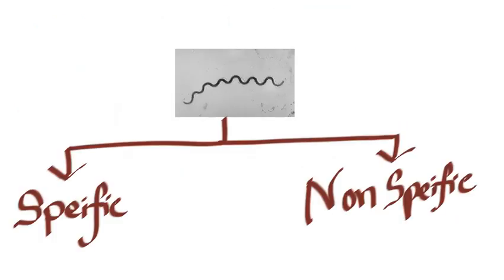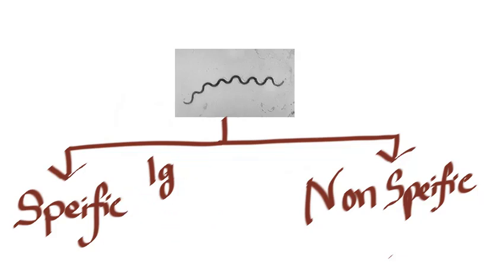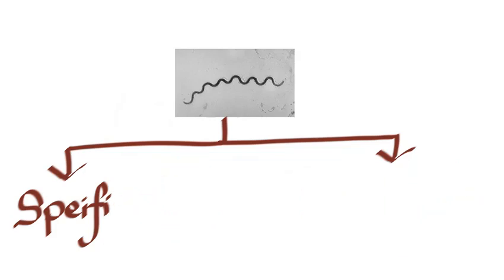Now let us look into the antibodies that Treponemal pallidum produces. There are two types: specific and nonspecific. Specific antibodies are produced specifically against Treponemal antigen. They are either IgM or IgG, and they will only react to Treponemal antigens and once positive, remain positive for life.